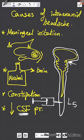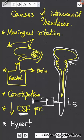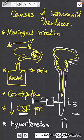Another example is hypertension, a very common cause of intracranial headache. In hypertension, there is marked expansion of the cerebral blood vessels — the vessels enlarge significantly — and this pushes against the dura and other meninges, causing meningeal irritation and intracranial headache.